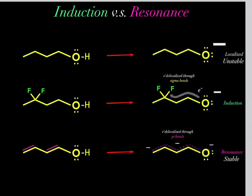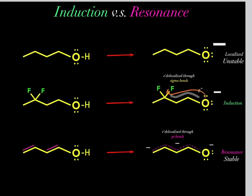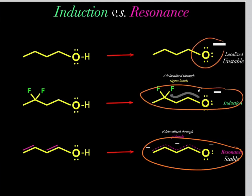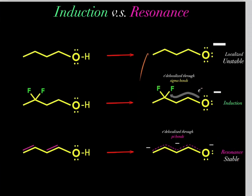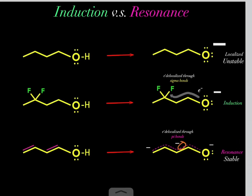So there's a hierarchy. If an oxygen is stuck with the negative charge, that's high charge density and very unstable. Induction can spread out that negative charge through the sigma bond system — through sigma bonds and sigma bond electrons — delocalizing the charge, which is more stable. However, resonance can delocalize the negative charge even better, through pi bonds and pi electrons. So resonance is more stable than induction, which is more stable than having the charge stuck on an oxygen.